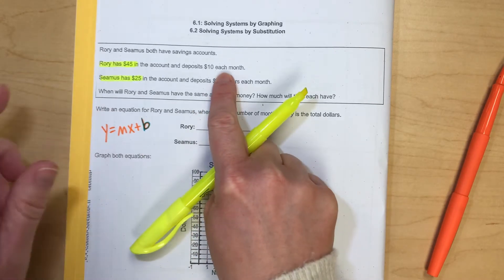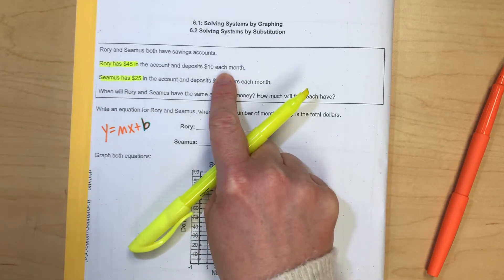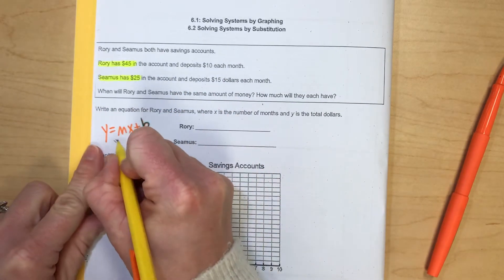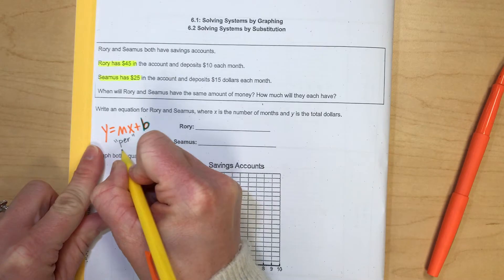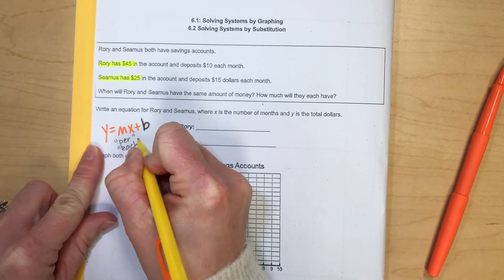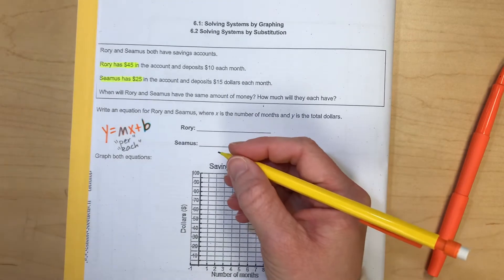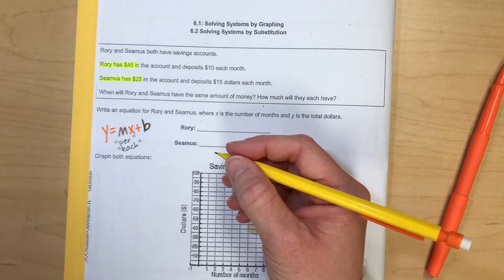It talks about money per month. When you see the word per or each, that's kind of our keyword. The word per or for each clues you in that that's going to be your slope because you're doing something per something else. So that's your rate of change.